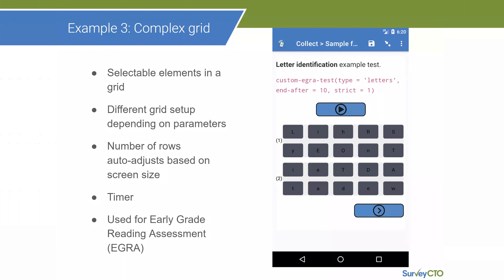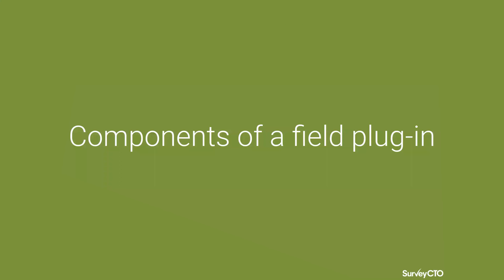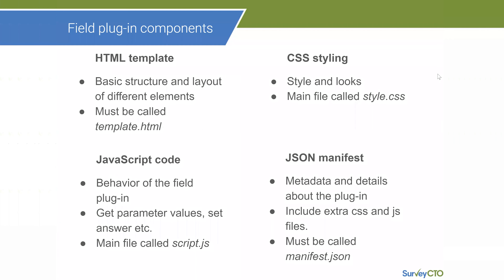So what exactly is a field plugin composed of? Primarily, a field plugin has four files. The first is the HTML template — used to define the basic structure and layout of elements, such as where the input box and text will be. This file must be called template.html. Secondly, we have CSS, also called Cascading Style Sheet, which you use for styling and giving appearance to your elements. This file is called style.css.